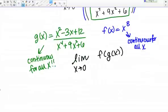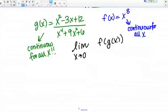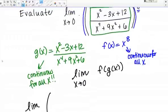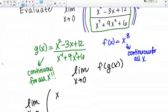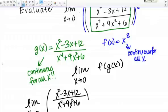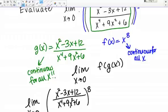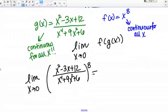Let me do that down here. Basically what I'm saying is the limit as X goes to 0 of my function, so that's X squared minus 3X plus 12 over X to the 4th plus 9X squared plus 6, all to the 8th. That limit is simply equal to the function value, so I just need to plug in 0.